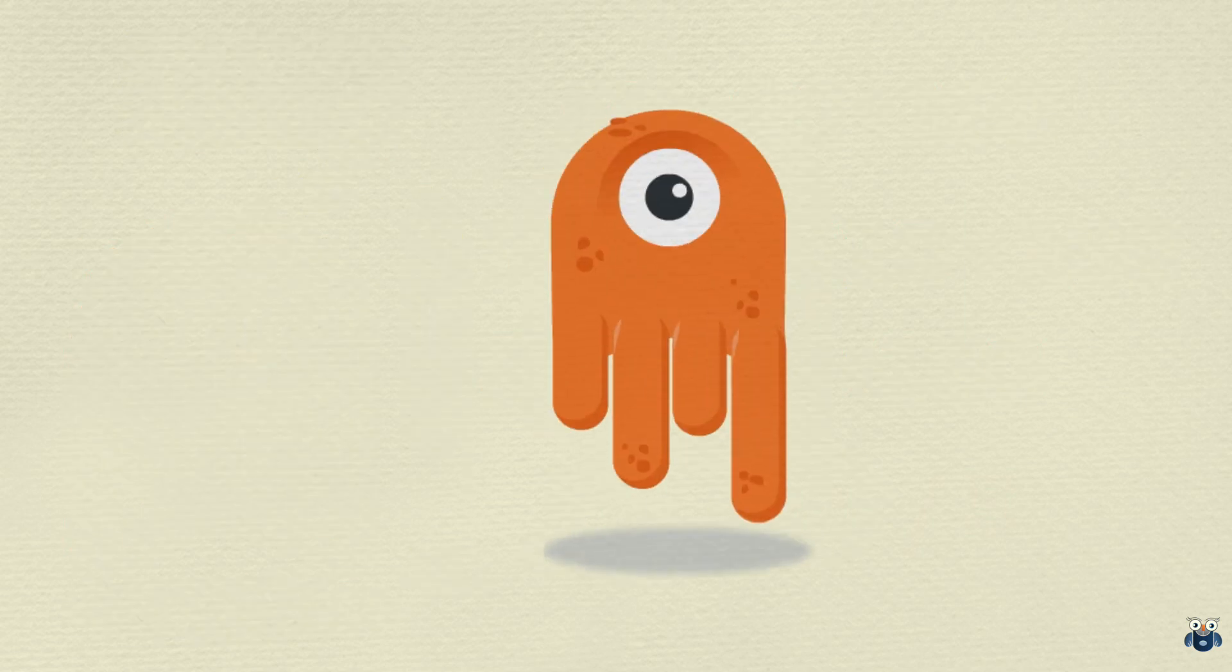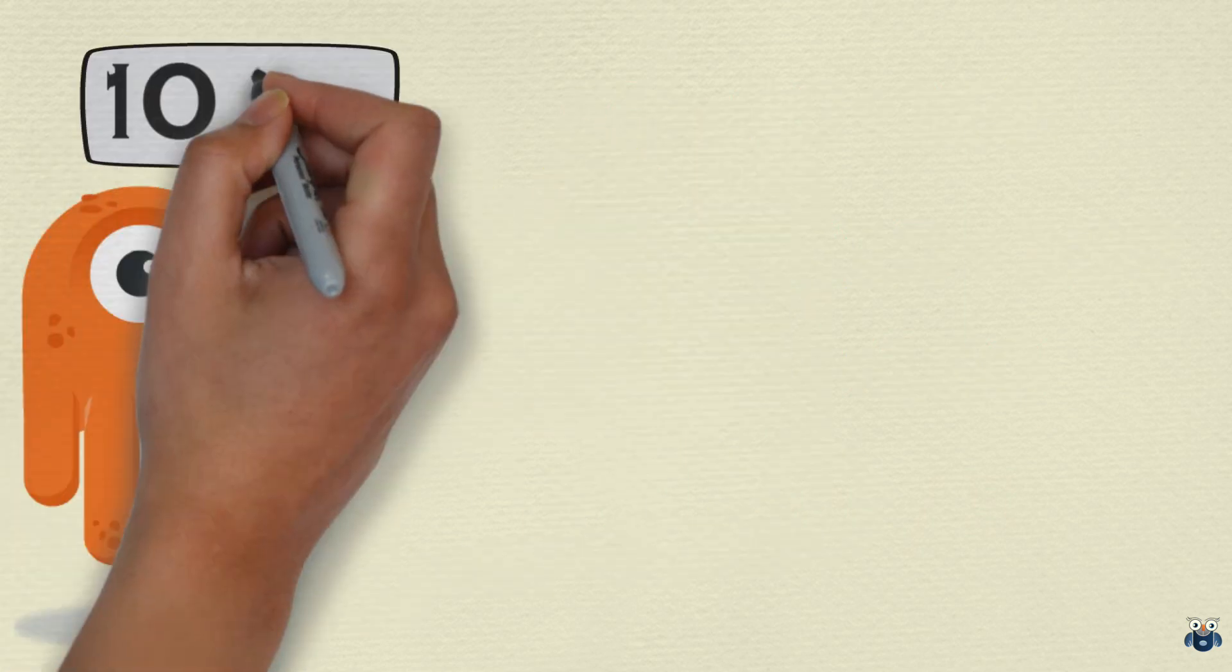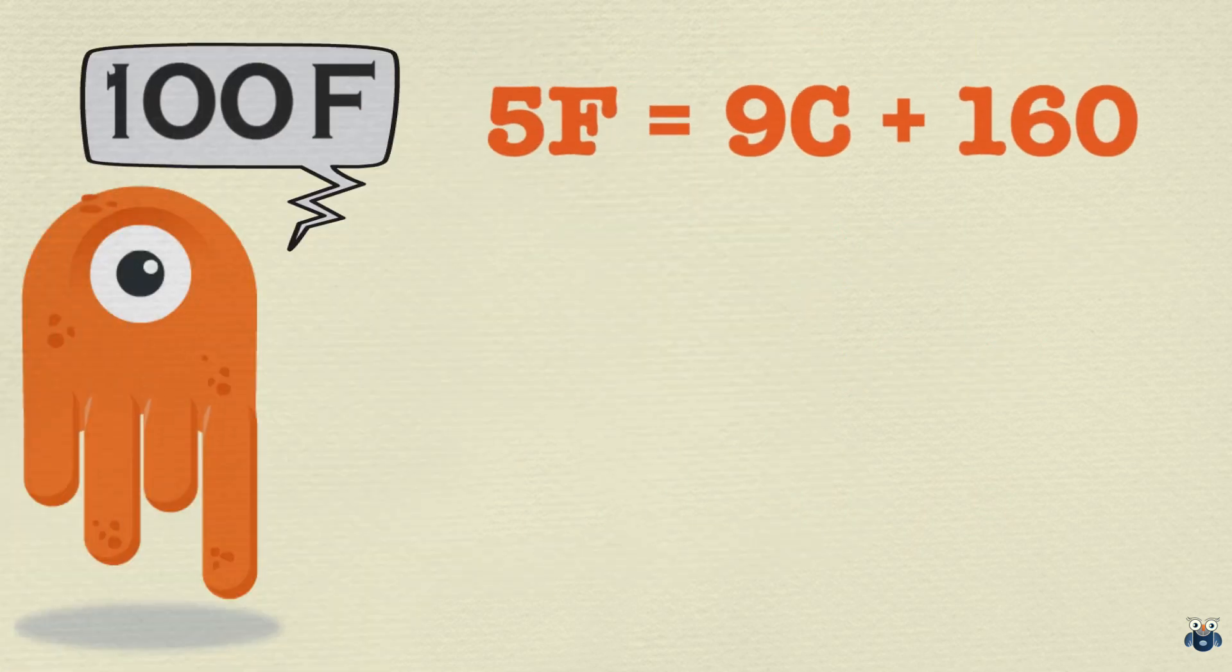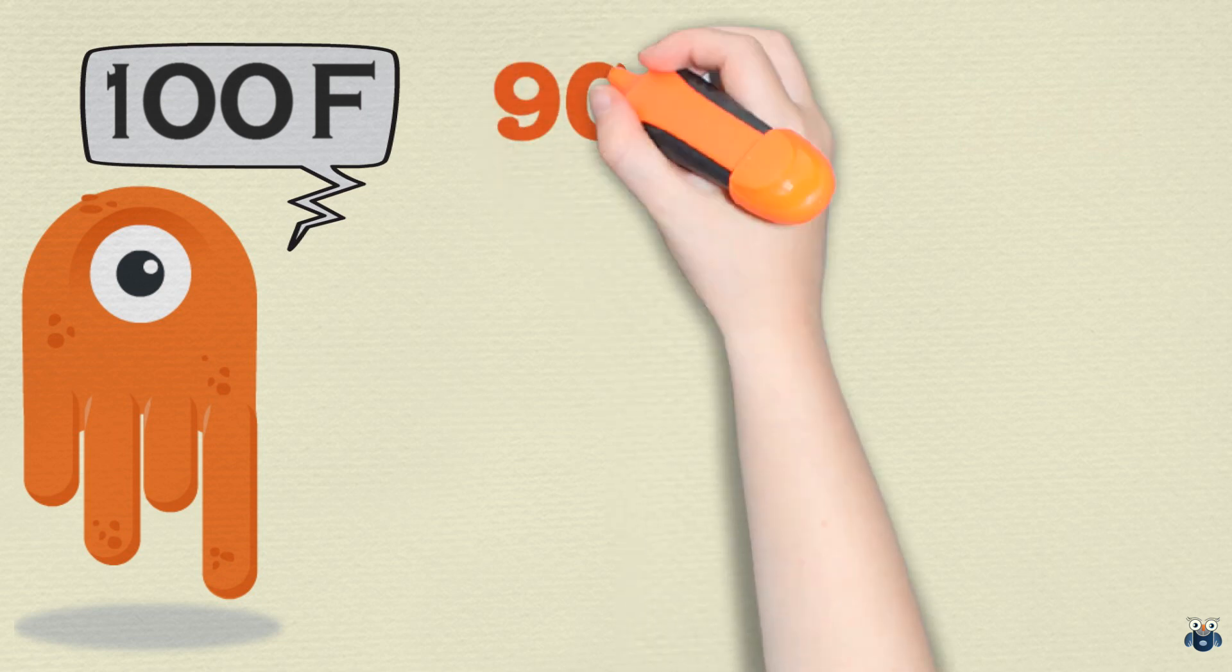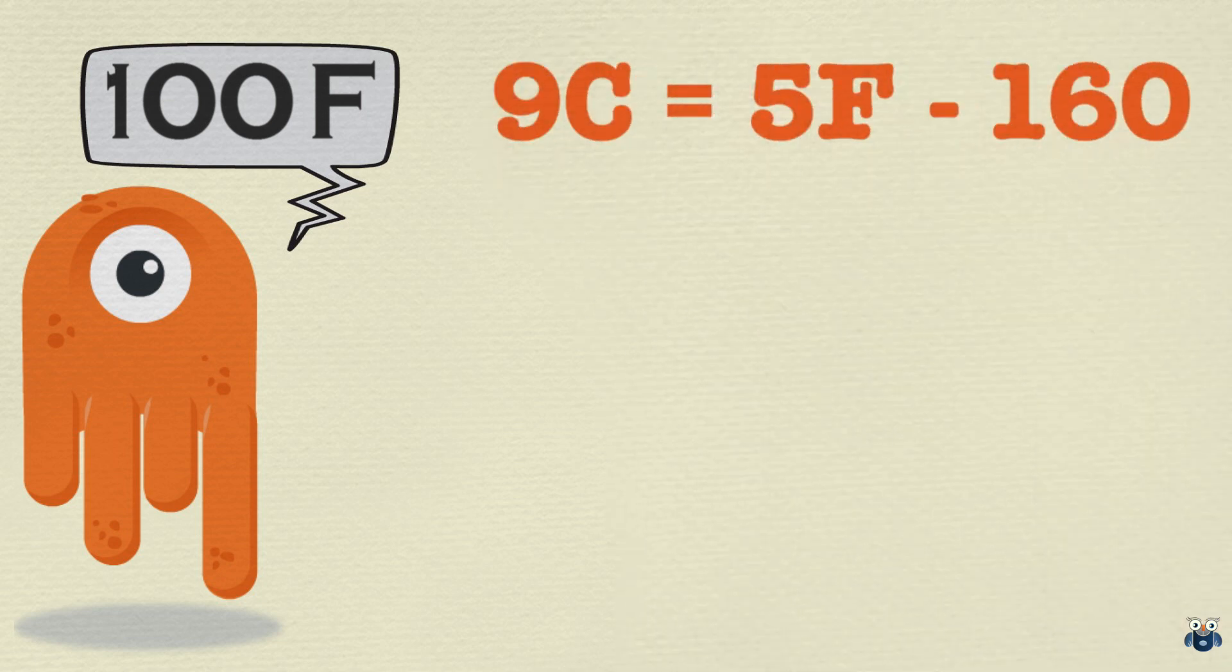Let's take one more example. What is 100 degrees Fahrenheit in centigrade or Celsius? In this case, I need to juggle my formula a bit. Moving 160 to the other side, we get 9C equal to 5F minus 160. Let's plug the value in this formula.